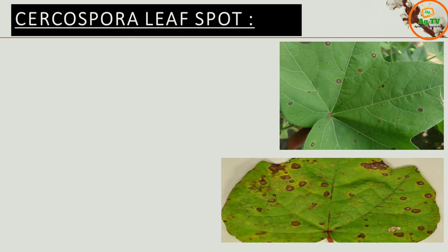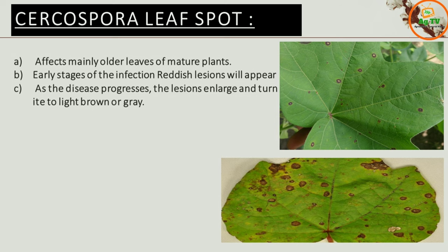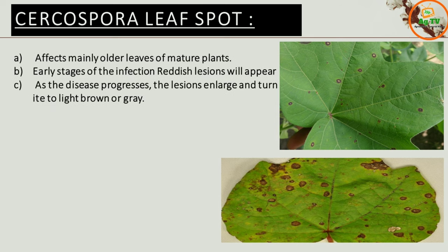Next, we can see Cercospora leaf spot. You can see photos on the screen. Cercospora leaf spot occurs only in mature plants and older leaves. In the early stage, you can see reddish color lesions and spots. As the disease increases, the lesions and spots grow and convert from yellow to brown or grey.